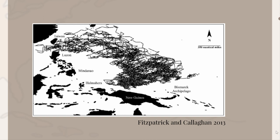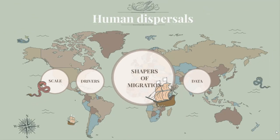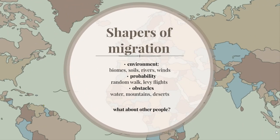Very often what we're doing is not actually modeling why people are dispersing, but just that they are dispersing, and then you draw the lines of how that would be possible. Shapers of migrations: when people are already moving, the direction they go very often depends on the environment around them. For big dispersals we usually use biomes — people prefer to move through environments they're used to. For sea dispersal, winds and currents are the currency of direction.